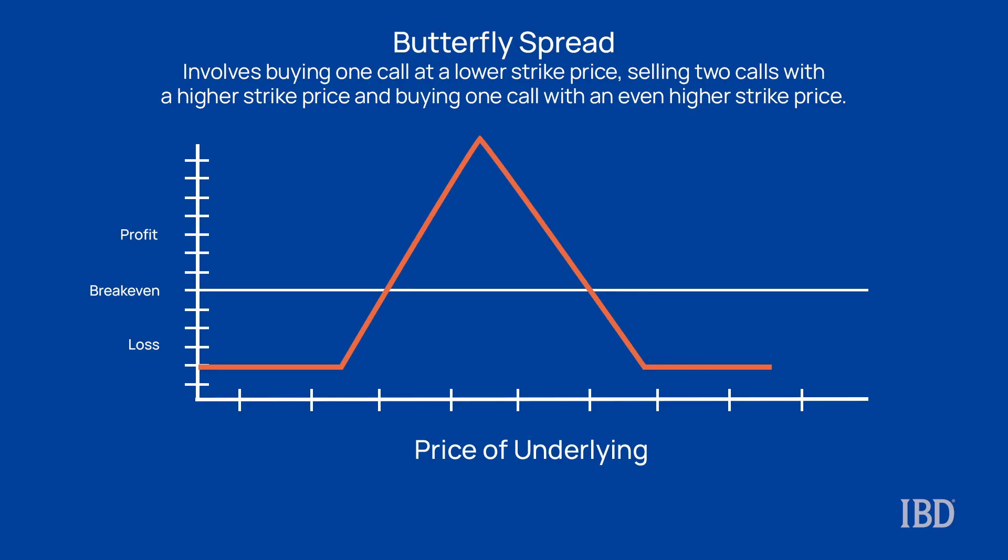Typically, butterflies would be constructed by buying one in-the-money call, selling two at-the-money calls, and buying one out-of-the-money call. So now let's take a look at Xilinx and set up this trade.